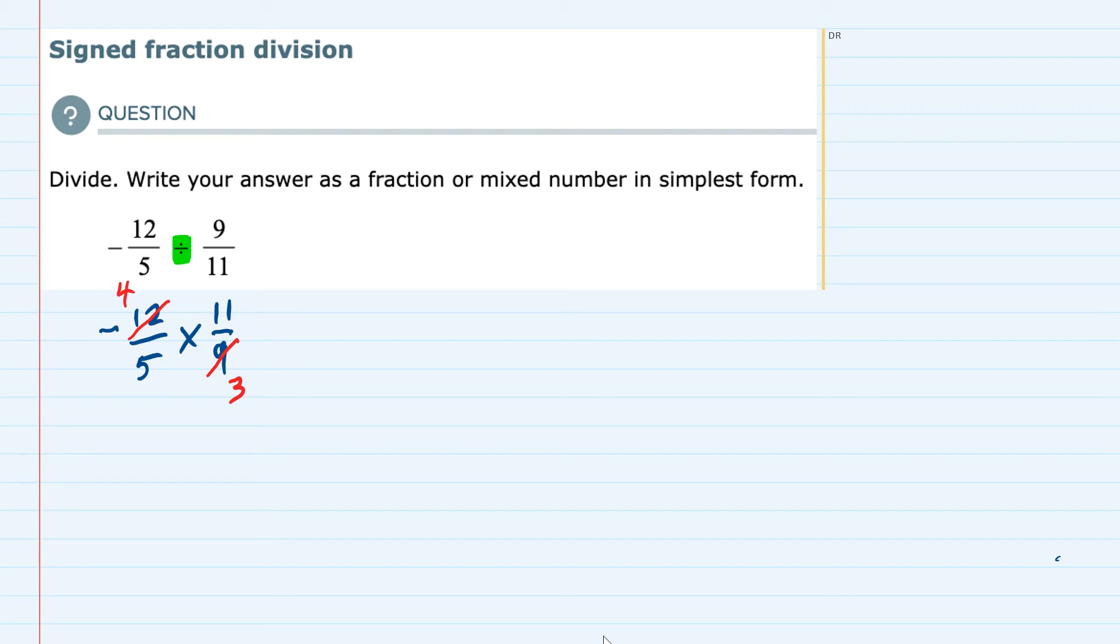Now that we've reduced the problem, we can multiply the top. 4 times 11 is 44, and we can multiply the bottom. 5 times 3 is 15.